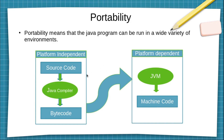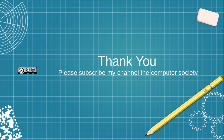For example, if I have written my code for Windows, and now I want to run this code on Mac or Linux, I don't need to make any changes to my source code. It is the responsibility of the JVM to take the same bytecode and convert it into Linux-specific code that can be run on Linux. Thank you — I hope this is clear. If you have any questions, write in the comments and please subscribe to my channel, The Computer Society.